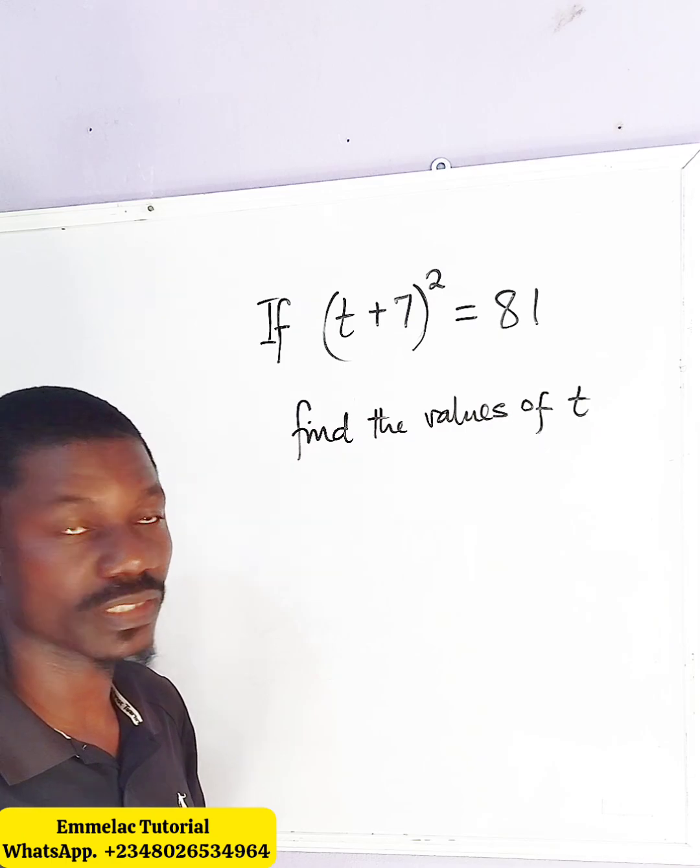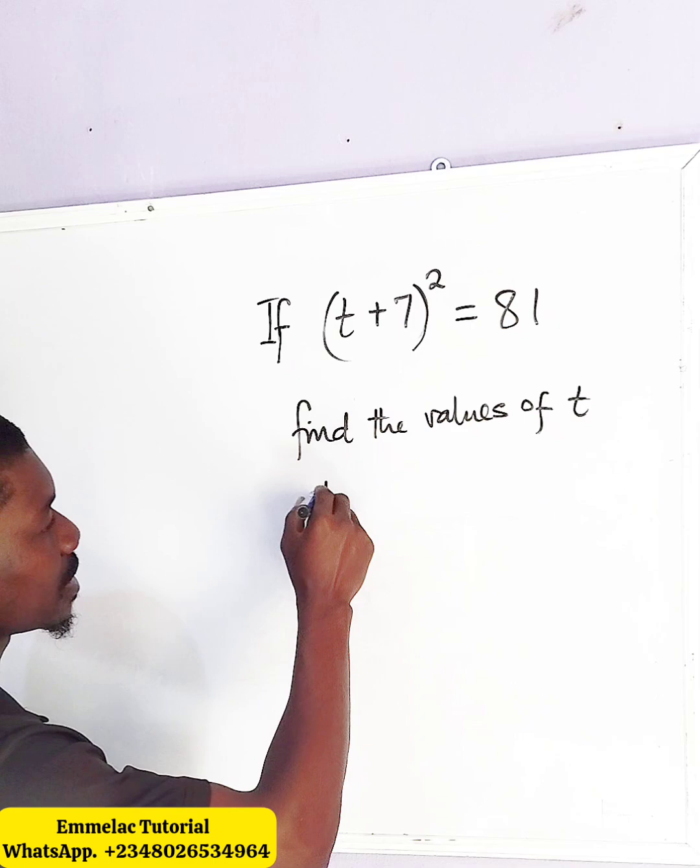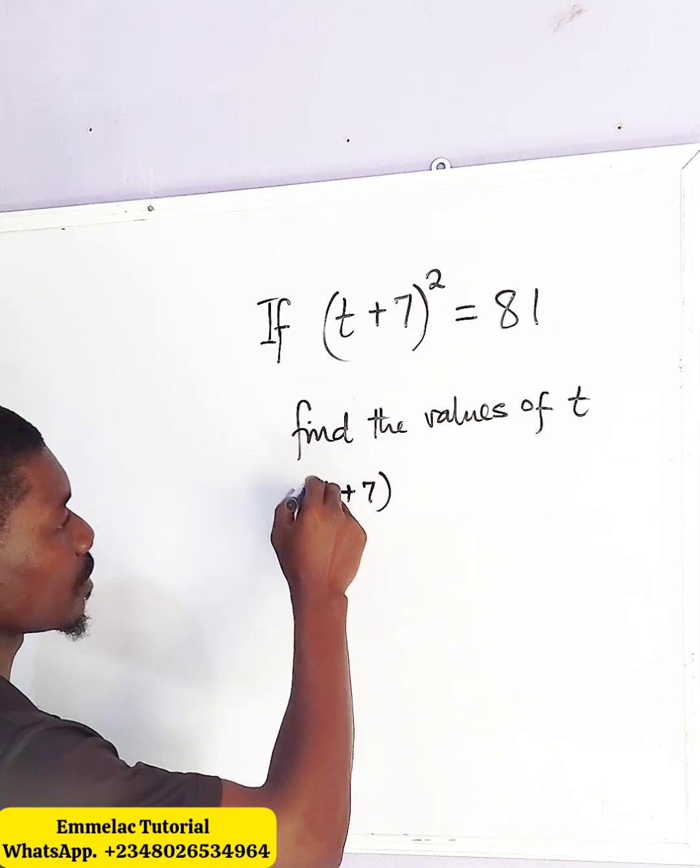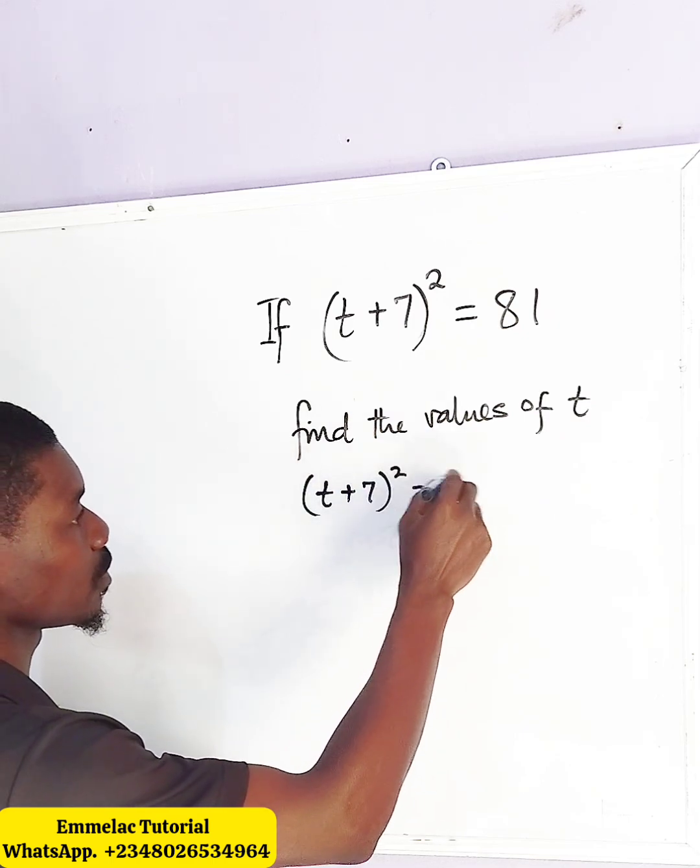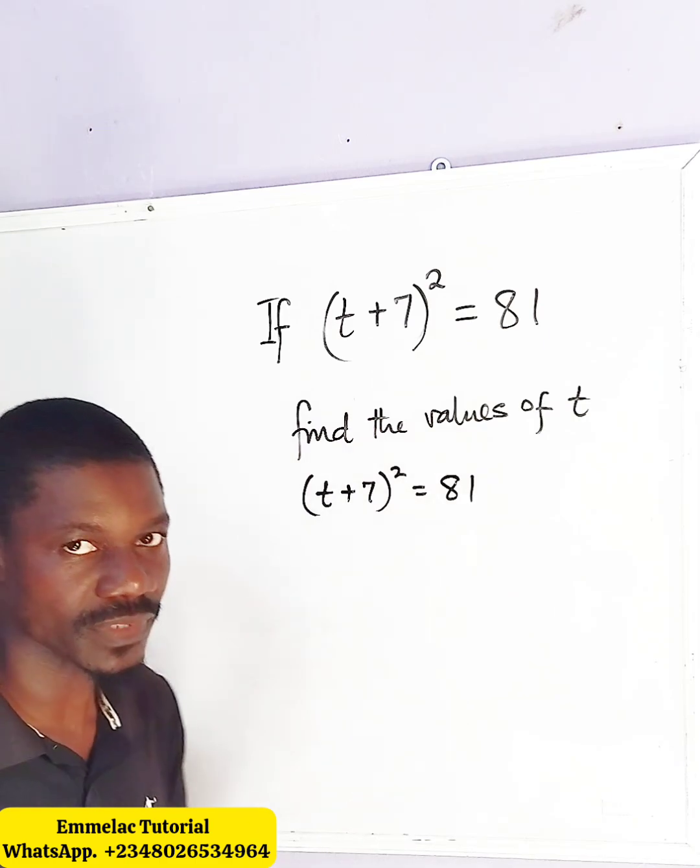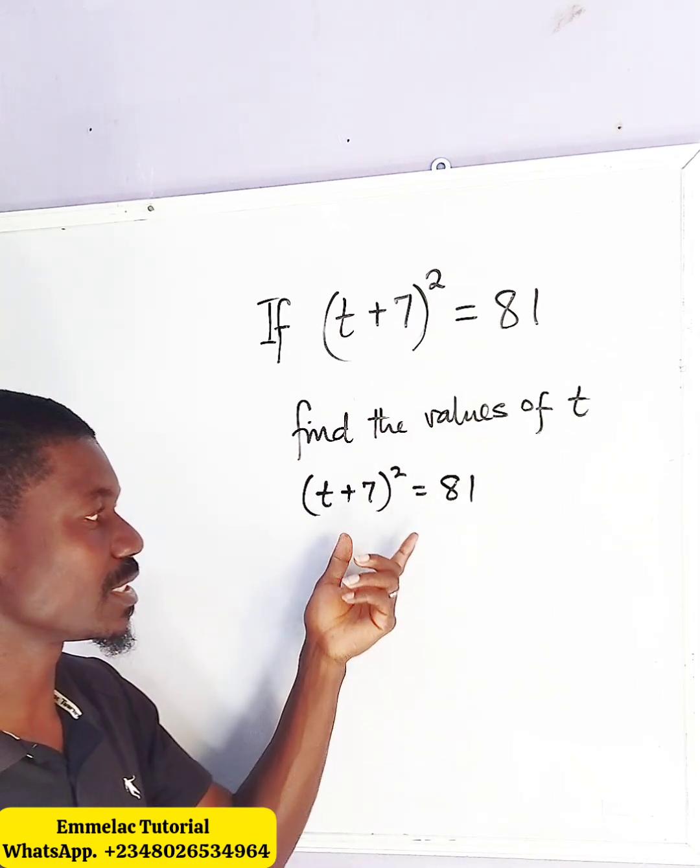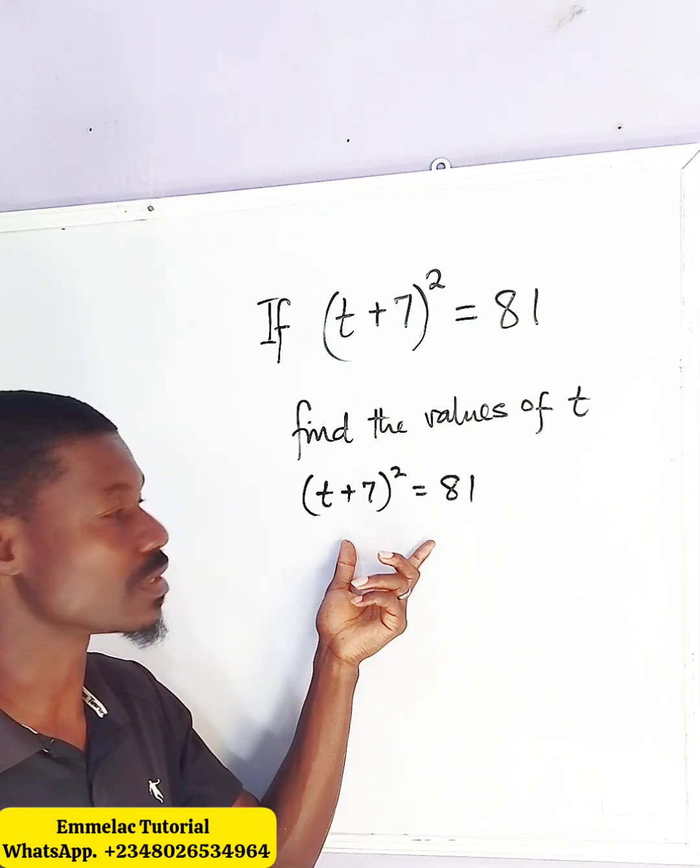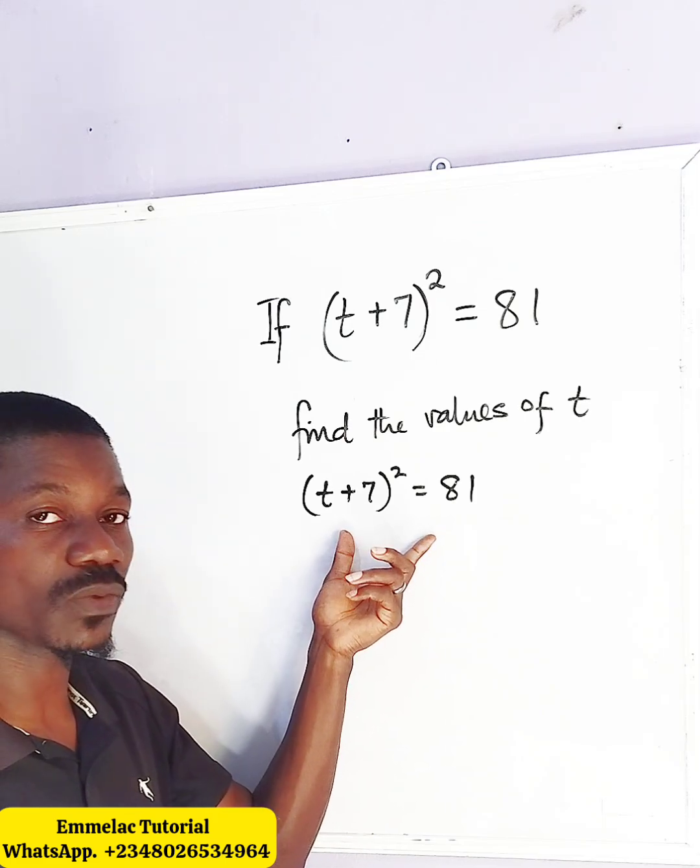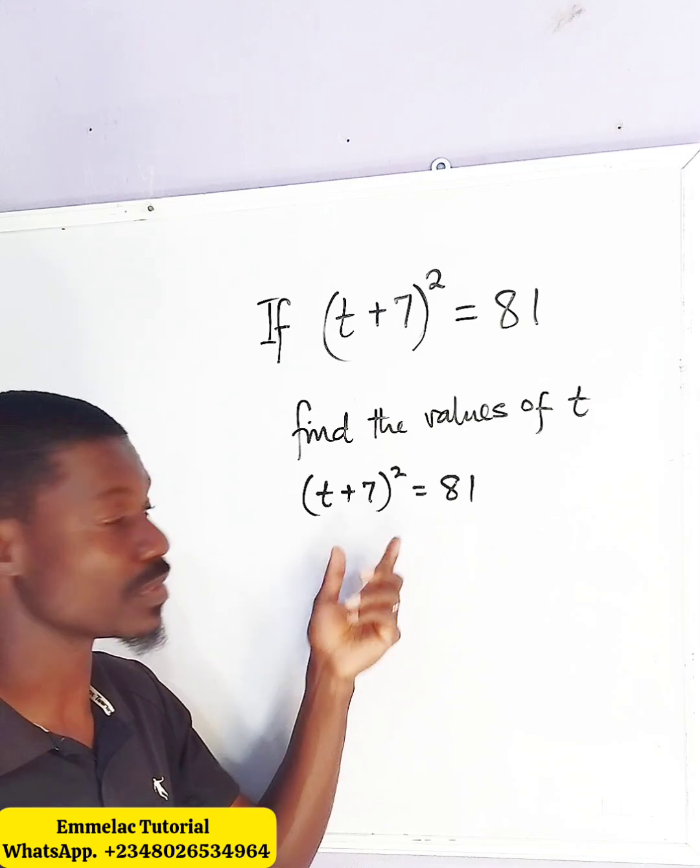So how do we get started? Let's see. Here we have (t+7), all raised to the power of 2, all equals to 81. Now, let's take note that this is an equation, and since this is an equation, there's something we need to observe, and that is,